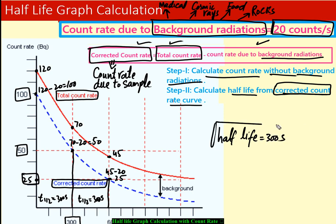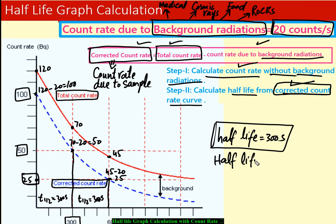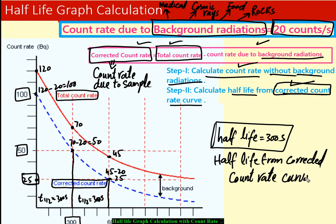So the half-life is 300 seconds — quite straightforward. Step one: calculate count rate without background radiation. Step two: draw the corrected count rate curve and calculate half-life from that curve. It is important to always use the corrected count rate curve, not the total count rate curve.